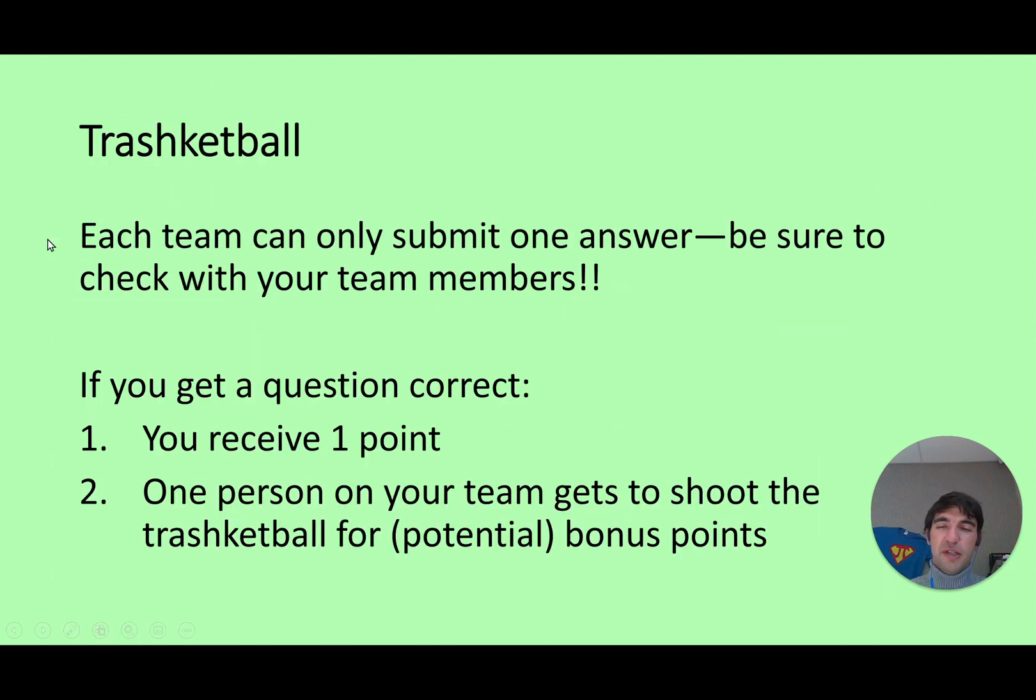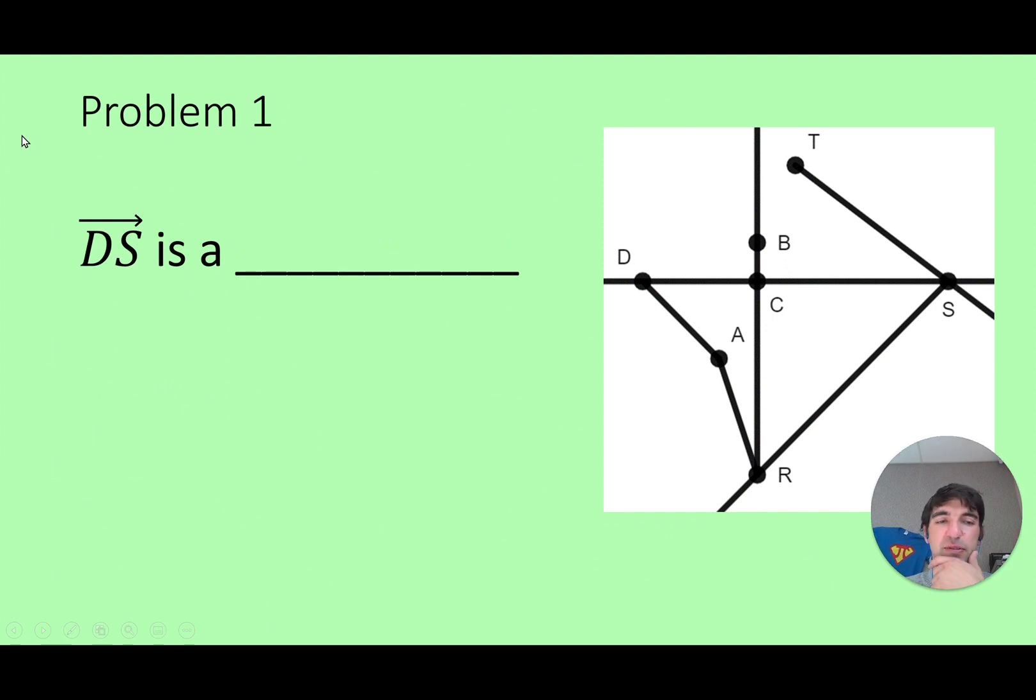So to the review problems let's see what we've got. S with a one-sided arrow is a what? That's going to be a ray. So I can see that symbol on top means start at D go one direction forever. So that's what we call a ray.